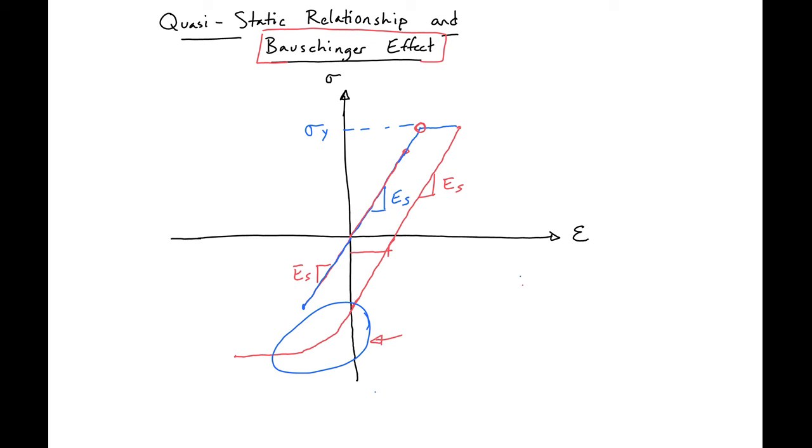And if we were then to come back up, and let's say we keep loading a little bit, and then come back up, we'll still have our slope ES. And we could come up and we'll round off again. So you can see Bauschinger effect would have the same effect up there.